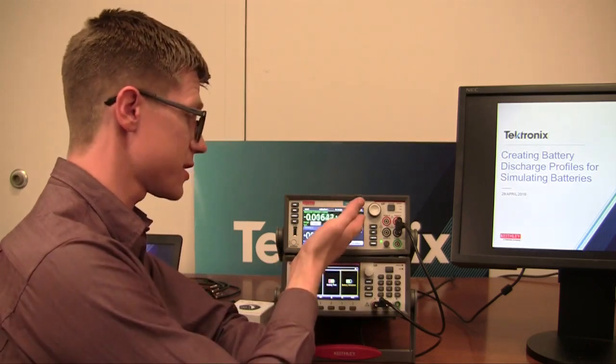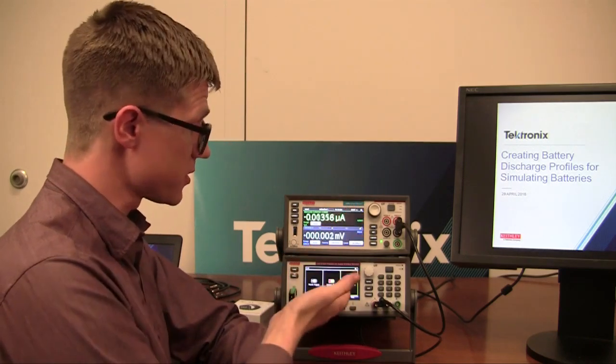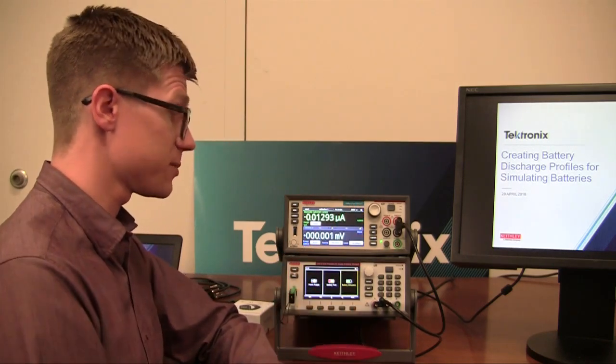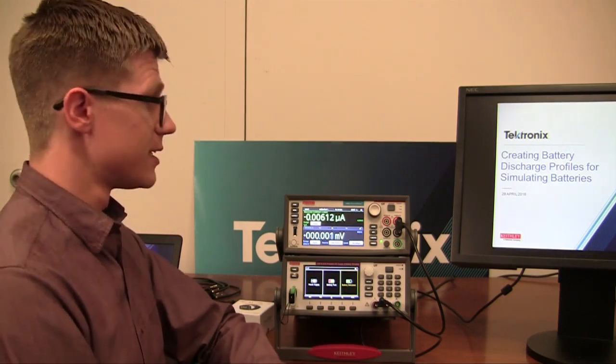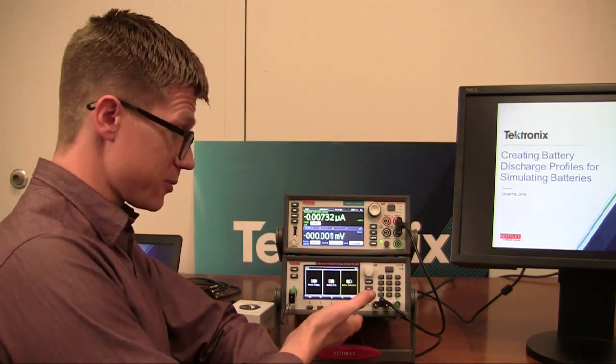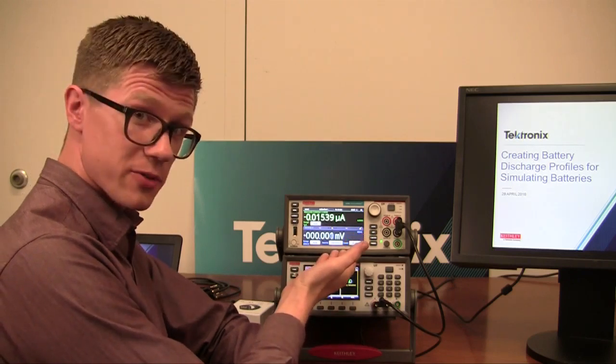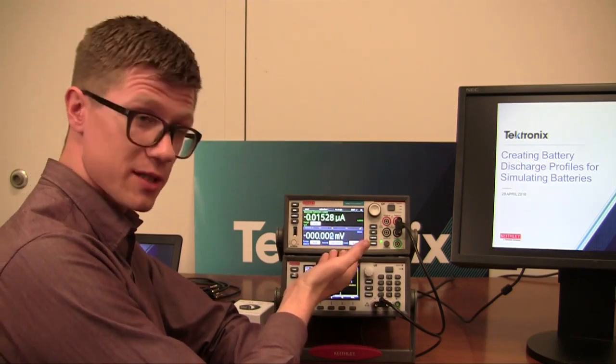So essentially what we're going to do is connect the 2460, in this case, to the 2281S Precision DC Supply and Battery Simulator and we're going to simulate a battery with this one and then discharge the battery with this and create a model of it.